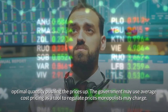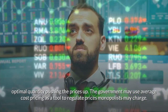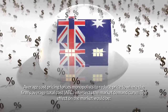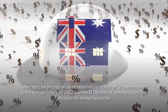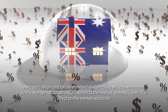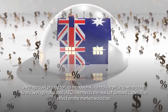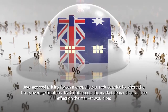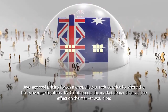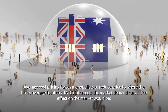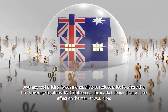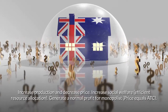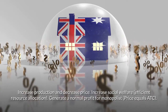Average cost pricing forces monopolists to reduce price to where the firm's average total cost (ATC) intersects the market demand curve. The effect on the market would be an increase in production and a decrease in price.